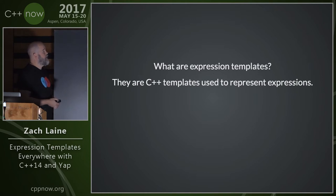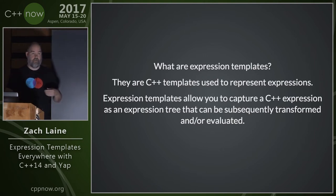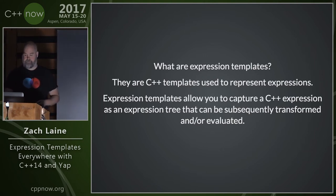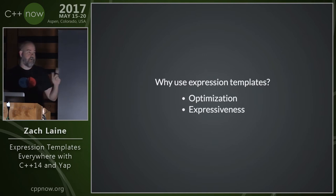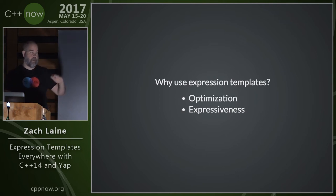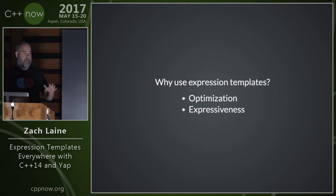Expression templates are literally C++ templates that you use to represent expressions. This allows you to capture an expression as a tree and then use it for transformation and evaluation later. The point of this is twofold: optimization is a big one, and expressiveness is the other. You always get expressiveness even when you get the optimization, because what you get is a nice abstraction over the optimization where you don't have to see all the steps explicitly.